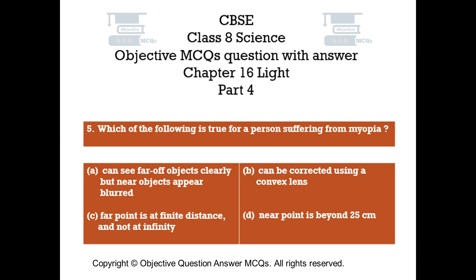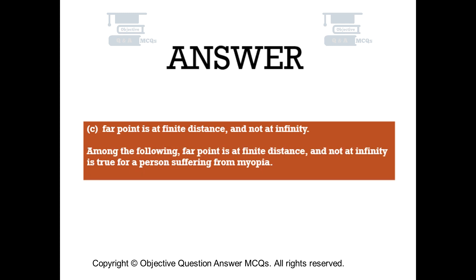Question number 5. Which of the following is true for a person suffering from myopia? Option A can see far off objects clearly but near objects appear blurred. Option B can be corrected using a convex lens. Option C far point is at finite distance and not at infinity. Option D near point is beyond 25 centimeters. The right answer is option C: far point is at finite distance and not at infinity, which is true for a person suffering from myopia.